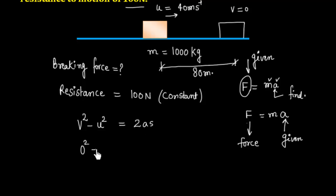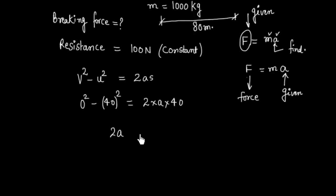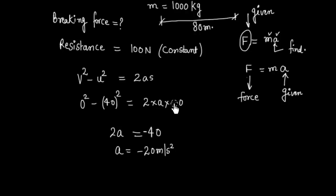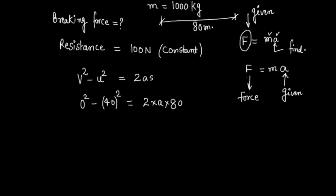Substituting: 0² - 40² = 2·a·80, giving -1600 = 160a, so a = -10 m/s². The magnitude of deceleration is 10 m/s².